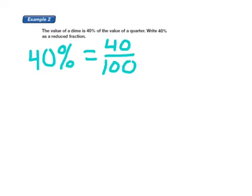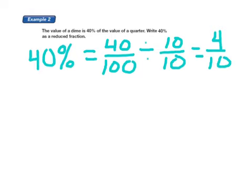Example two. The value of a dime is 40% of the value of a quarter. Write 40% as a reduced fraction. So I know that 40% is equivalent to 40 one-hundredths. And now I know that 10 is a factor of both 40 and 100. So I'm going to divide by 10 tenths. 40 divided by 10 equals 4. 100 divided by 10 equals 10. And I get 4 tenths.